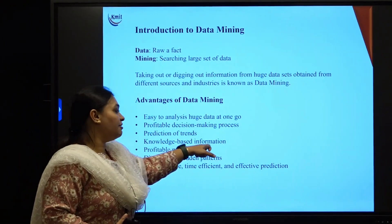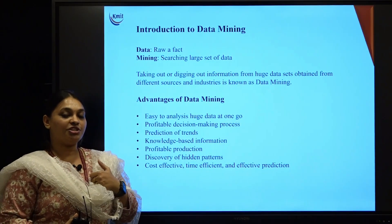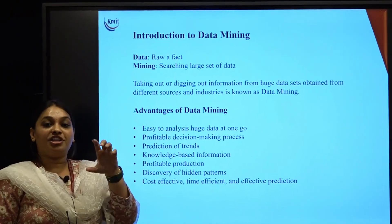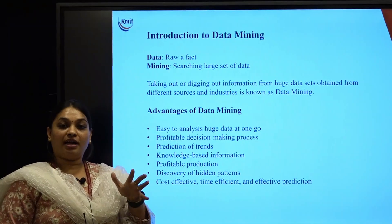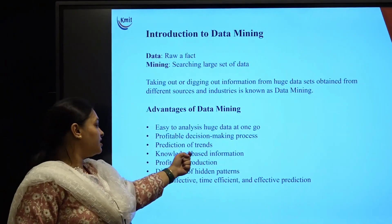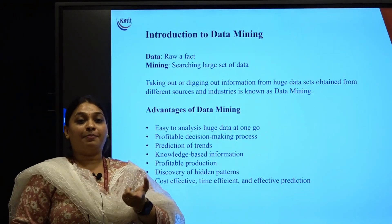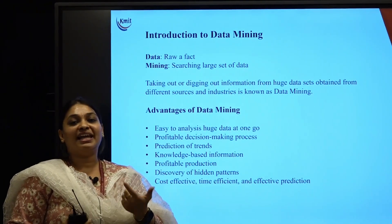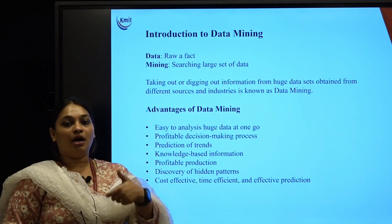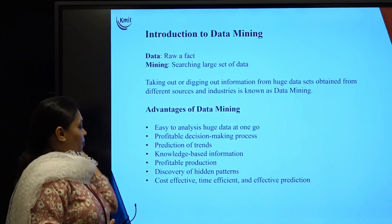Next is knowledge-based information — meaning knowledge about the product and how the customer is reacting to it. Then comes profitable production: the product which sells more gives more profit. That is nothing but your profitable production.